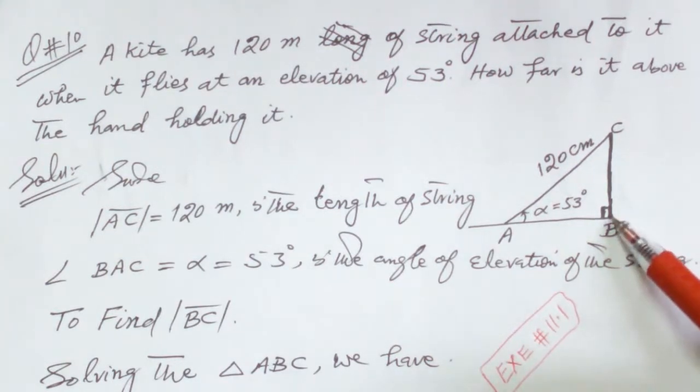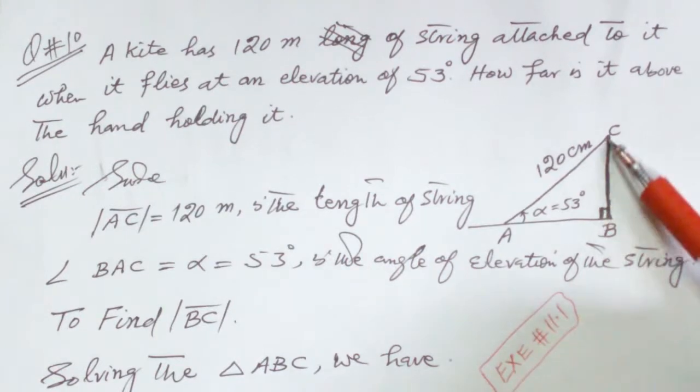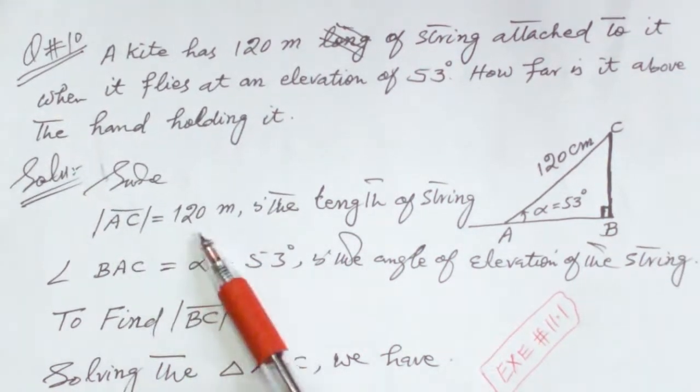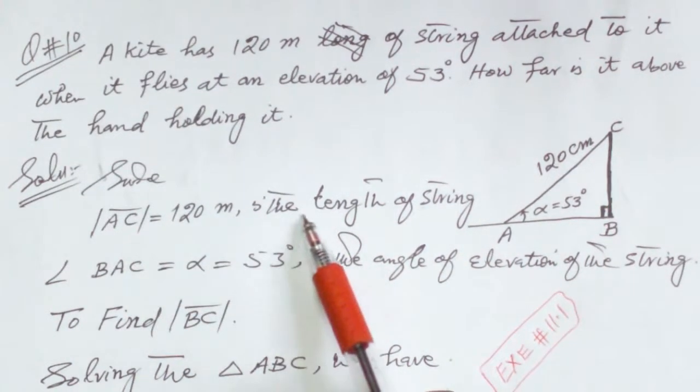So we have to calculate BC. Since ABC is a triangle, AC is equal to 120 meters, the length of the string.